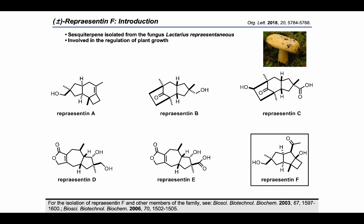Representin F is a protoilludene-related sesquiterpene isolated in 2006 from the fungus Lactarius representin, along with other members of this family, which possess biological activity related to the regulation of plant growth.